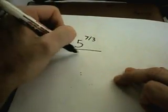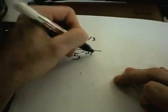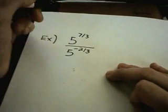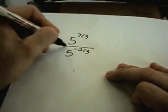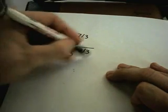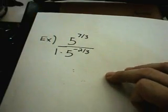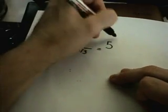You can combine fractional exponents with negative exponents. So, suppose I have 5 to the 7 thirds over 5 to the negative 2 thirds. Well, in this problem, I can think about there being a times 1 in the bottom. That's not going to change the denominator at all.